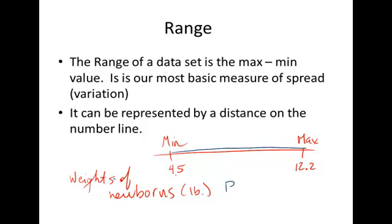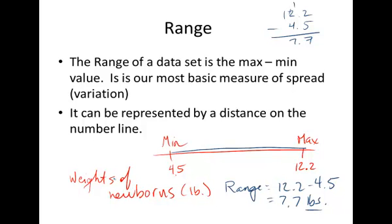And for that month, the smallest newborn weighed 4.5 pounds, and the largest newborn was 12.2 pounds. So the range is literally, on the number line, represented by the distance between those two numbers. That's the range.